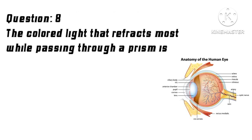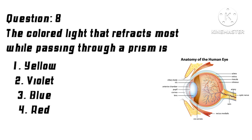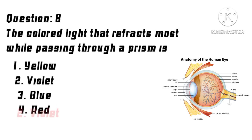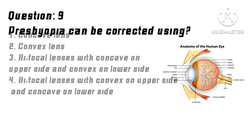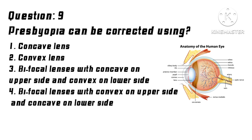Question 8: The colored light that refracts the most while passing through a prism is? Options: 1. Yellow, 2. Violet, 3. Blue, 4. Red. Correct answer: 2. Violet.